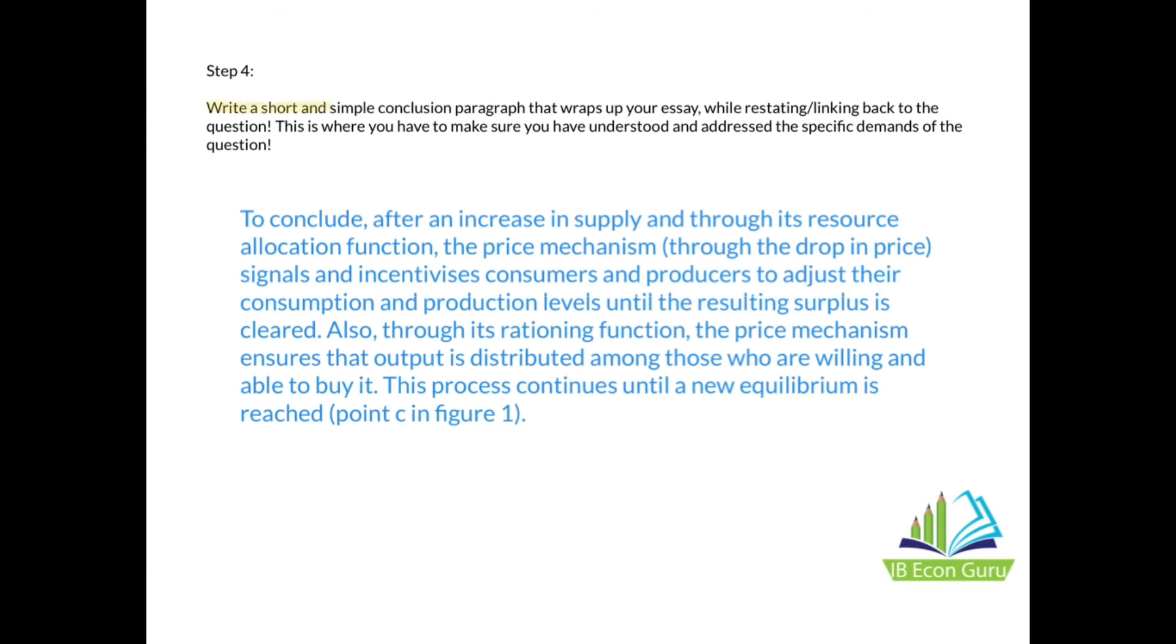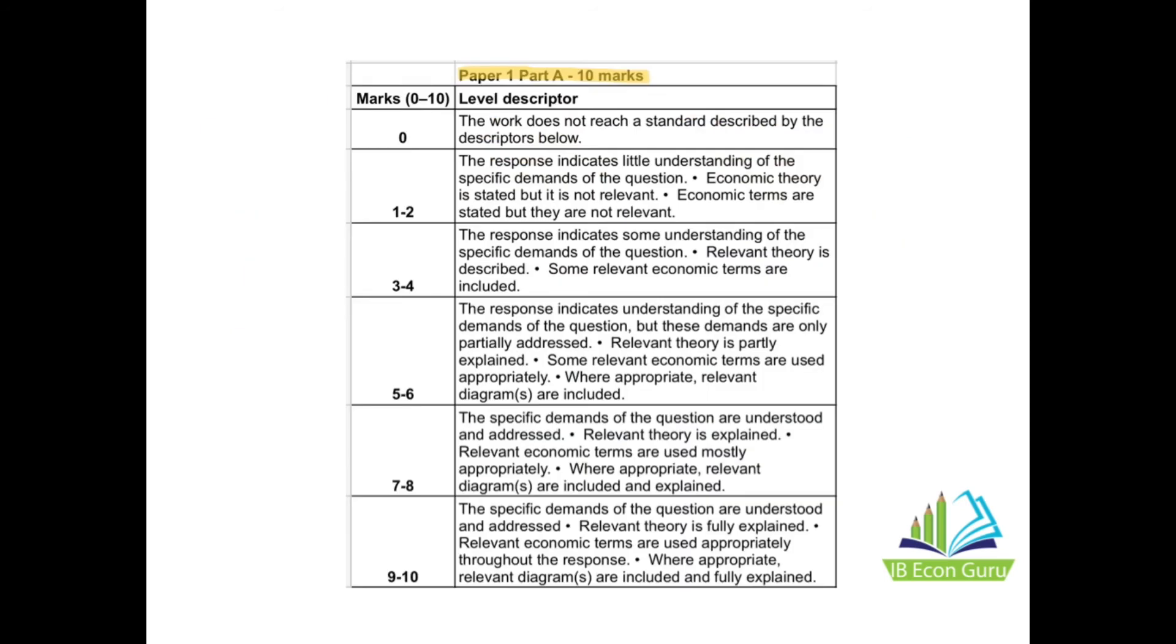Step 4 is to write a short and simple conclusion paragraph that wraps up your essay while restating or linking back to the question. This is where you have to make sure you've understood and addressed the specific demands of the question. My conclusion was: To conclude, after an increase in supply and through its resource allocation function, the price mechanism, through the drop in price, signals and incentivizes consumers and producers to adjust their consumption and production levels until the resulting surplus is cleared. Also, through its rationing function, the price mechanism ensures that output is distributed among those who are willing and able to buy it. This process continues until a new equilibrium is reached, which is point C in Figure 1.